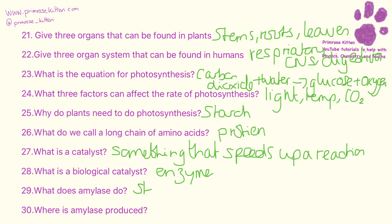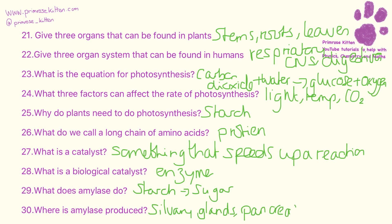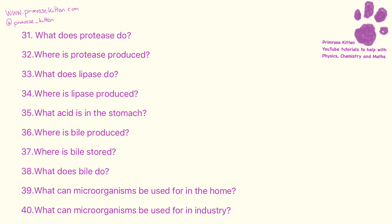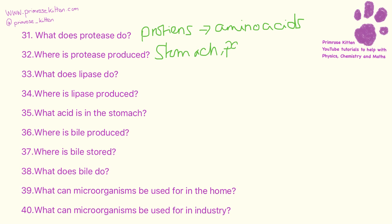Amylase breaks down starch into sugar, and this is produced in a number of places: the salivary glands, the pancreas, and the small intestine. Protease breaks down proteins into amino acids, and it is produced in the stomach, the pancreas, and the small intestine.